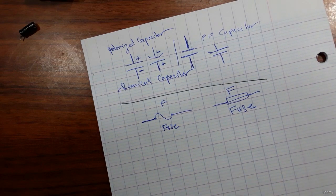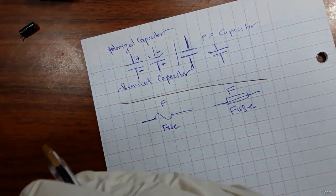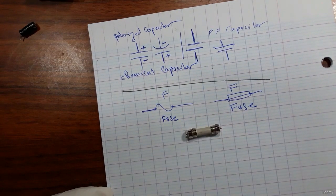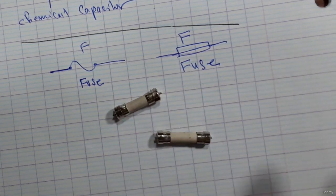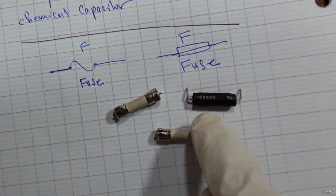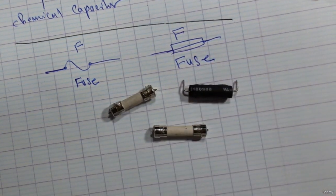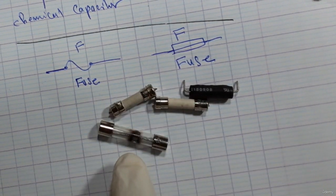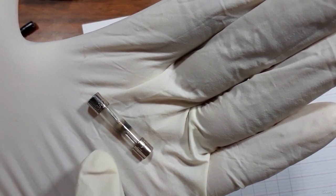The fuse is always used for protection — to protect other circuits or stages. Here is a fuse, and this is another fuse. We can also find a fuse in this shape; this is a covered fuse, covered by rubber. Here we have a big fuse that is filled. As you see, this fuse is burned out.